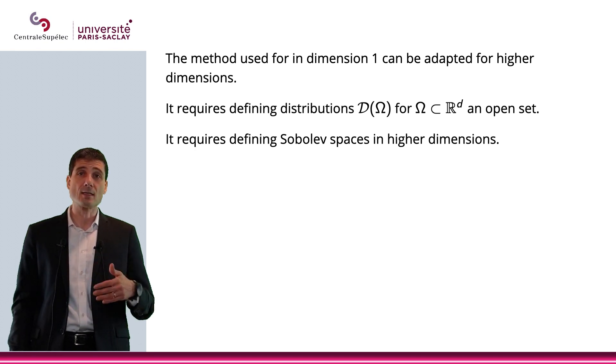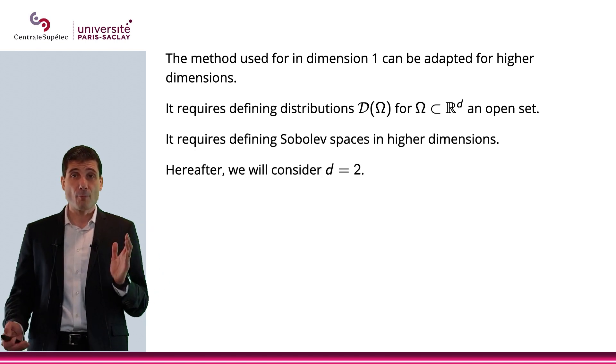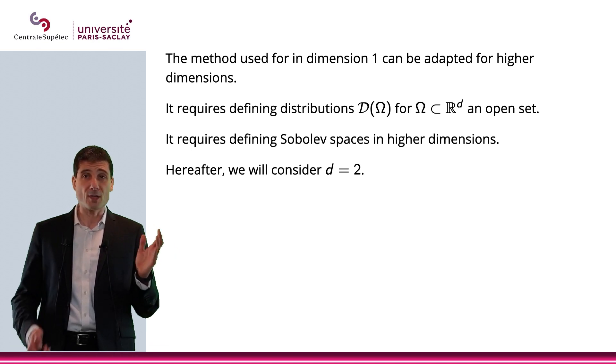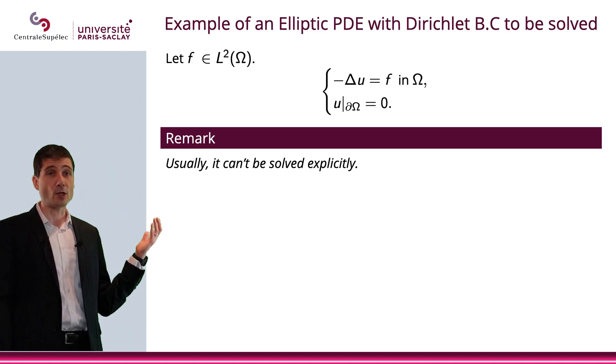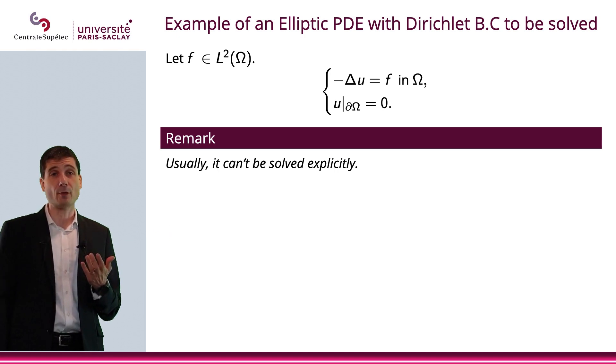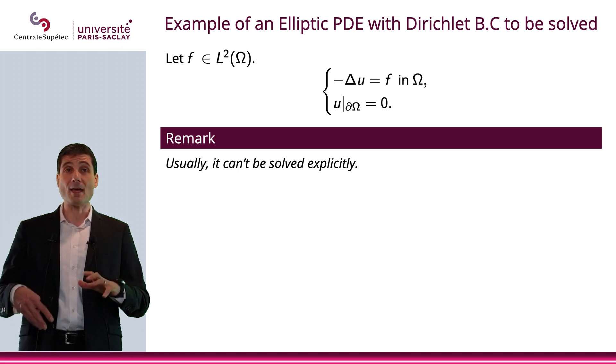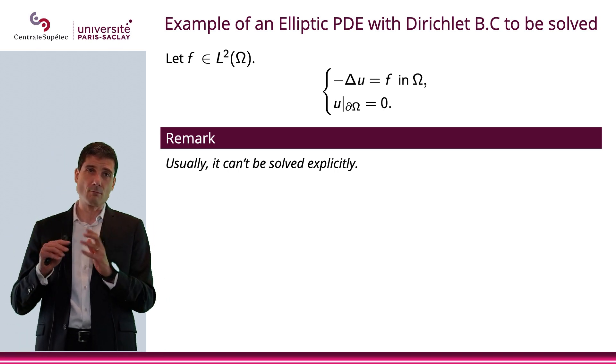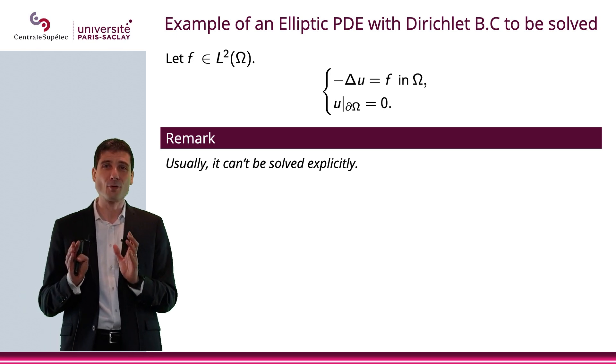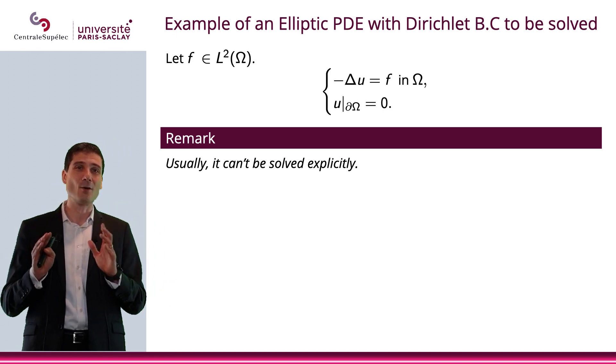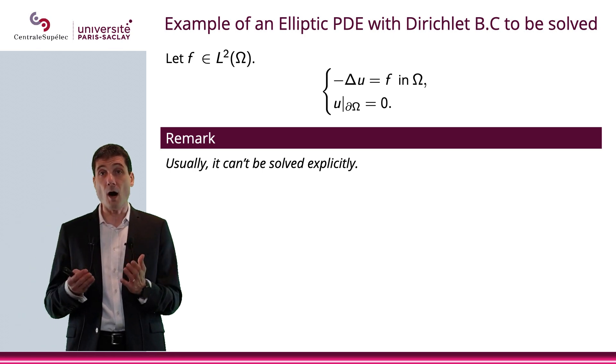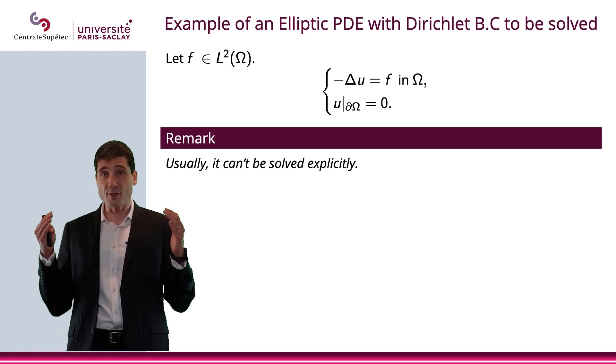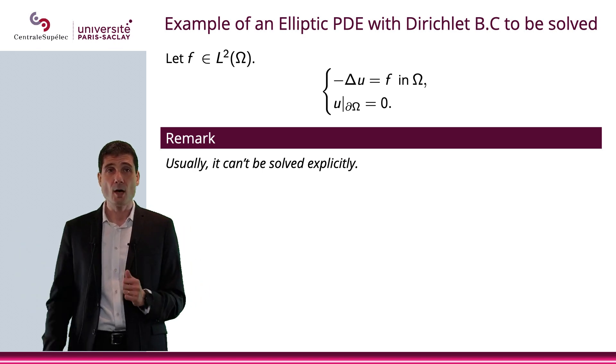What we did extends to higher dimensions. In this video, we consider d equals 2 and do what we did in the previous video but in the setting of dimension 2. We will consider this equation: f is in L^2, minus Laplace operator applied to u equals f in a domain omega, which is smooth enough, C^1. u will be equal to 0 on the boundary.